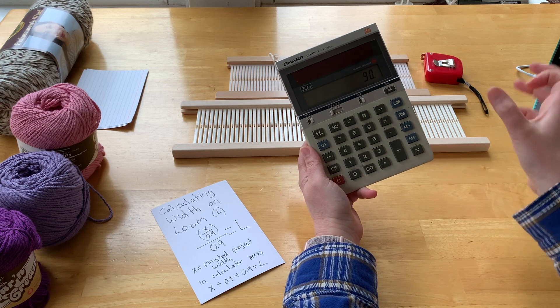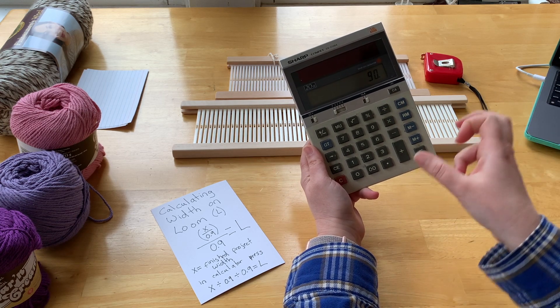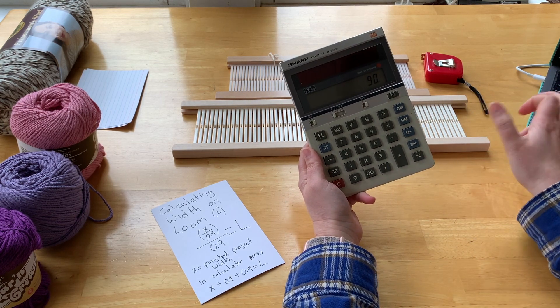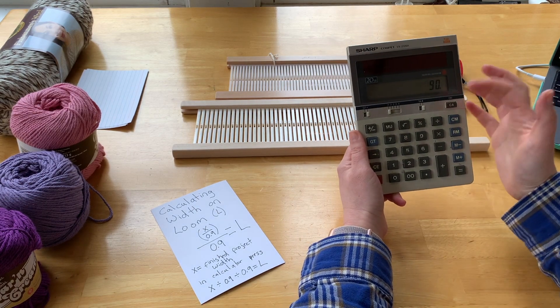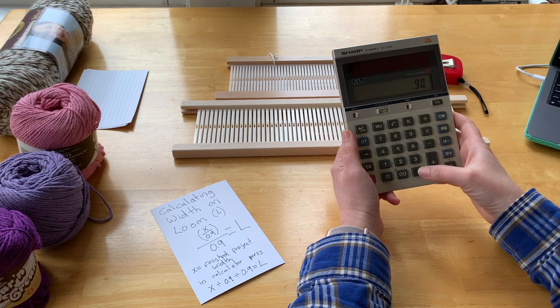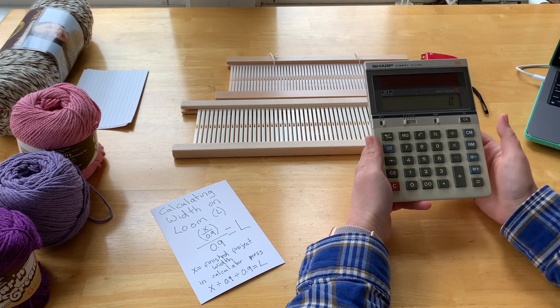Which gives me 90, meaning that 24-inch piece I have left is 90% of what it was before I washed it. And 90% into a decimal is 0.9.